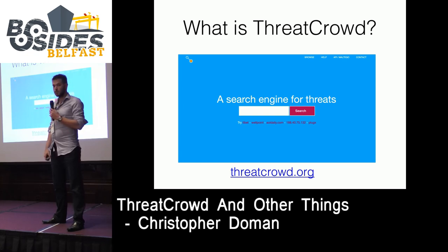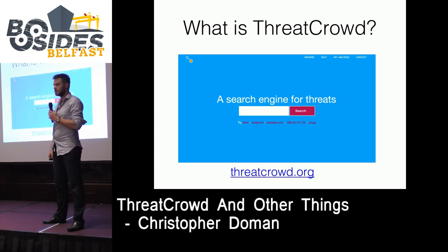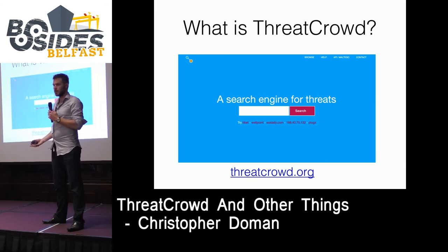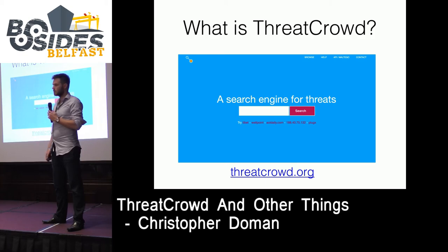This is ThreatCrowd.org, this is the front page. It's a threat intel platform — by that I mean it's a database of bad stuff: sandbox reports, passive DNS, WHOIS data, all that kind of stuff stuck into a web front end so you can search through it quickly. I'll show you how I use it and how you might want to use it, with a quick demo at the end too.